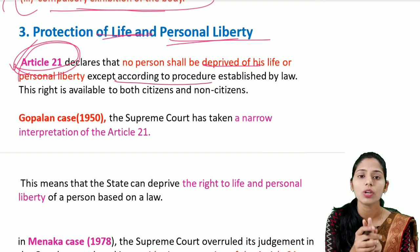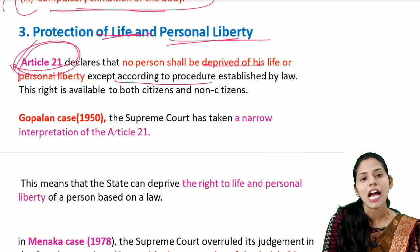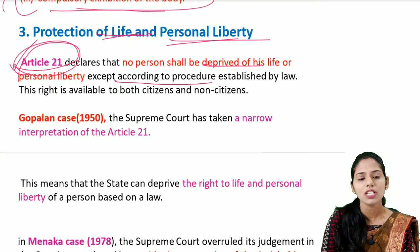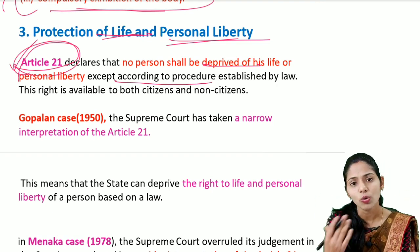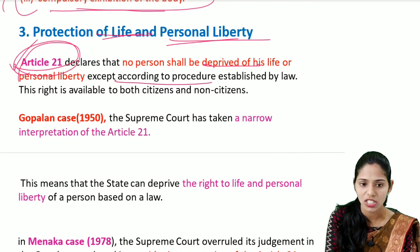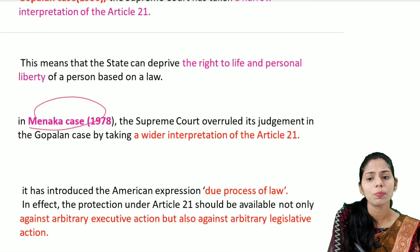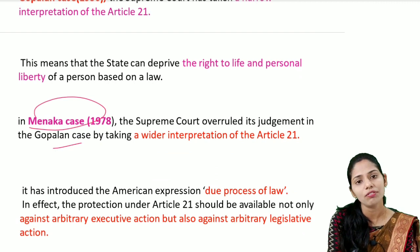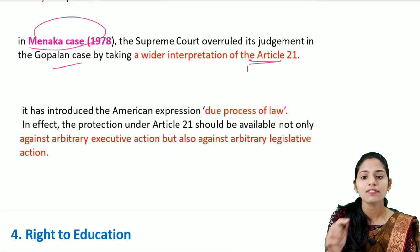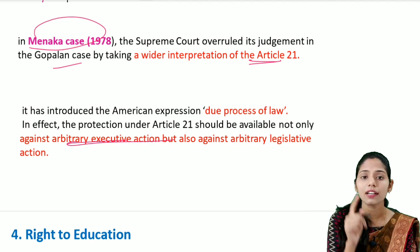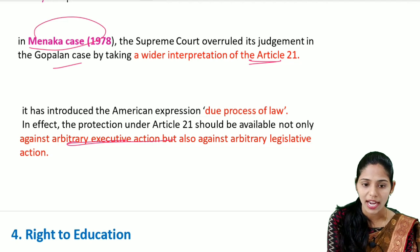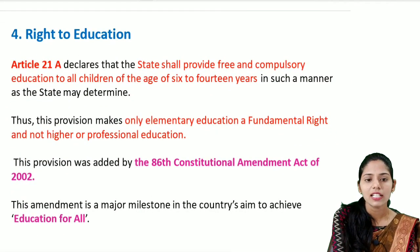Two important cases relate to Article 21. In the Gopalan case of 1950, the Supreme Court gave a narrow interpretation, holding that Article 21 is only protection against executive action, not legislative action. In the Maneka Gandhi case of 1978, the Supreme Court overruled Gopalan and gave a wider interpretation — Article 21 should be available not only against arbitrary executive action but also against arbitrary legislative action.